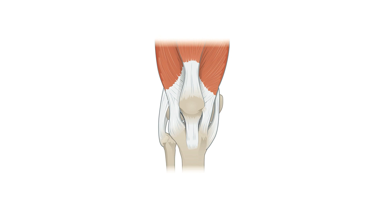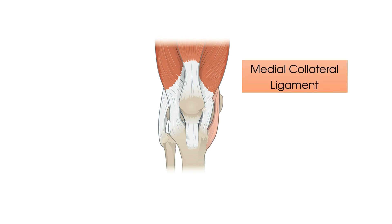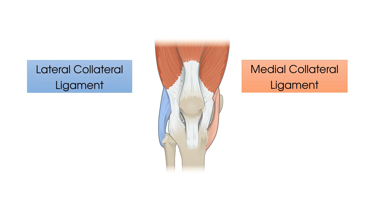Next onto the collateral ligaments. We have the medial or tibial collateral ligament, which originates from the medial femoral epicondyle and inserts into the proximal medial tibia, and we have the lateral or fibular collateral ligament, which originates from the lateral posterior femoral epicondyle and inserts into the anterior point of the head of fibula.